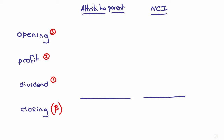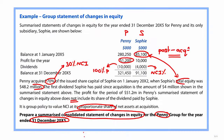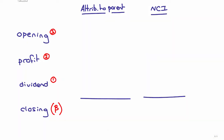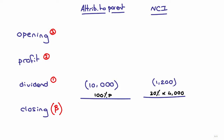To work out the dividends: within the parent column we show 100% of the parent's dividend paid out to the parent's shareholders, which was 10,000. For the NCI column, we show the non-controlling interest share of Sophie's dividend — that's 30% of 4,000, which is 1,200. Remember those figures need to go in brackets to show they are a distribution of earnings.